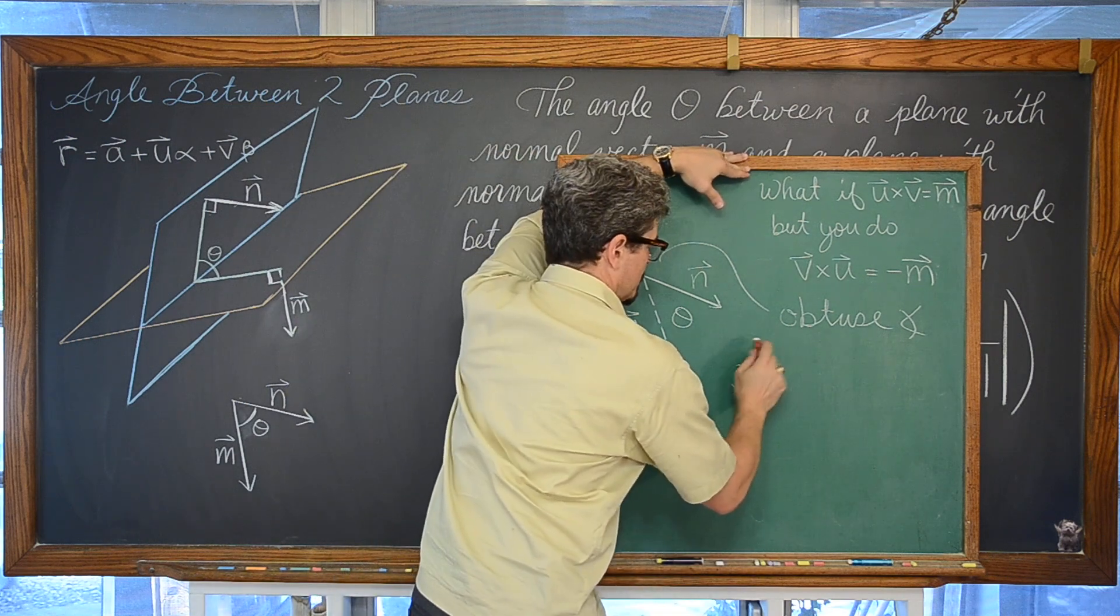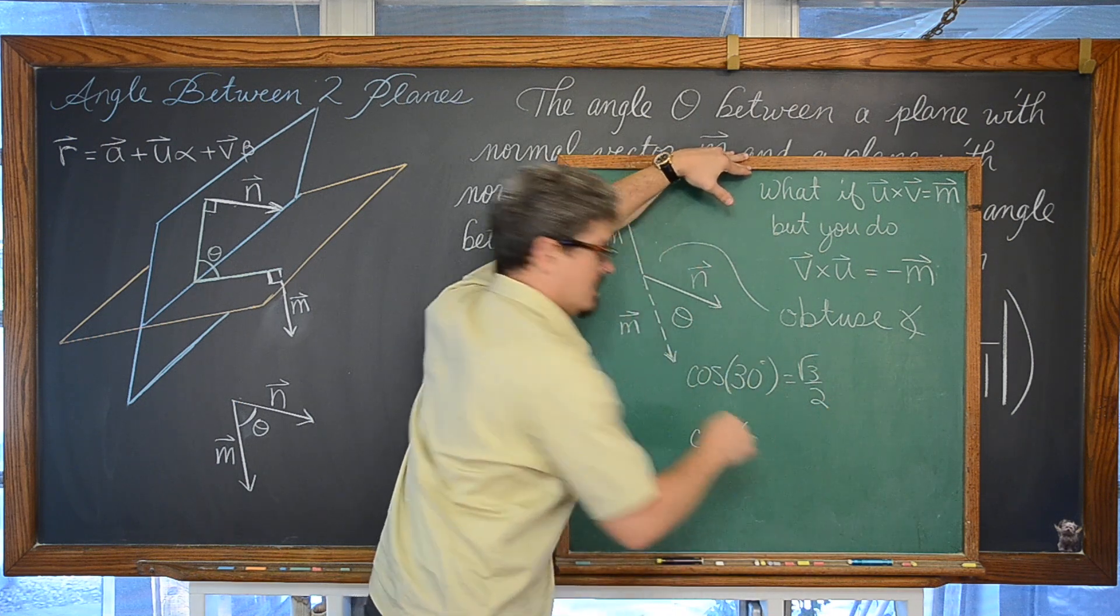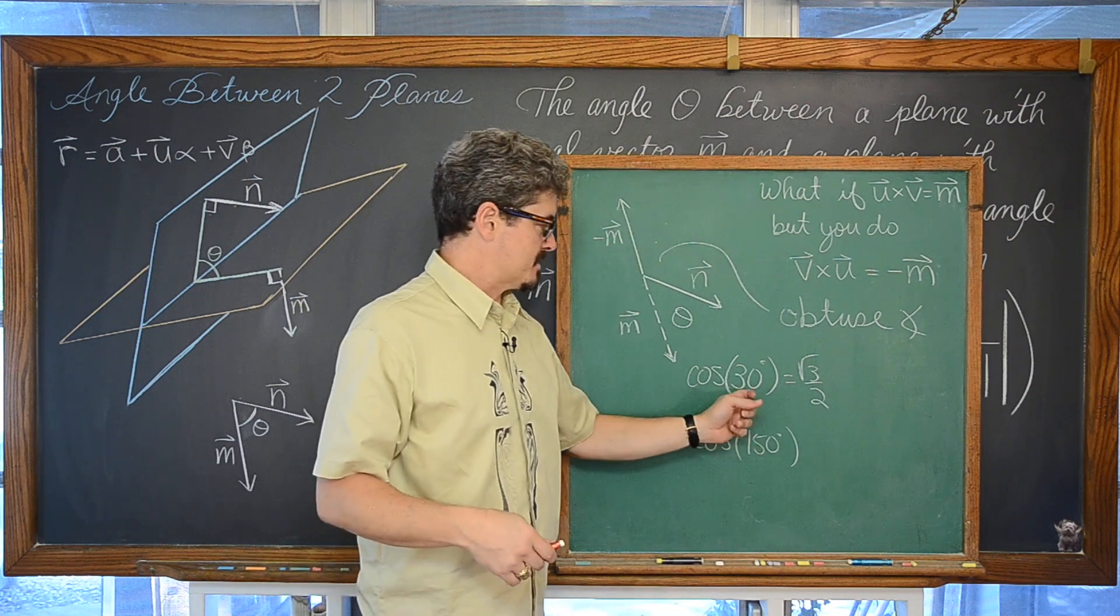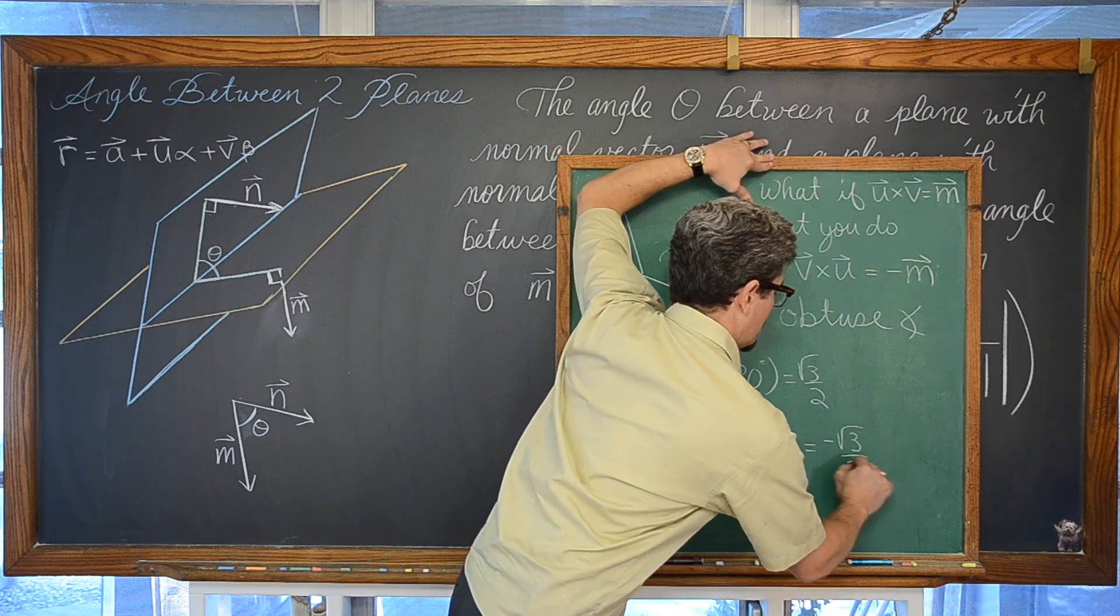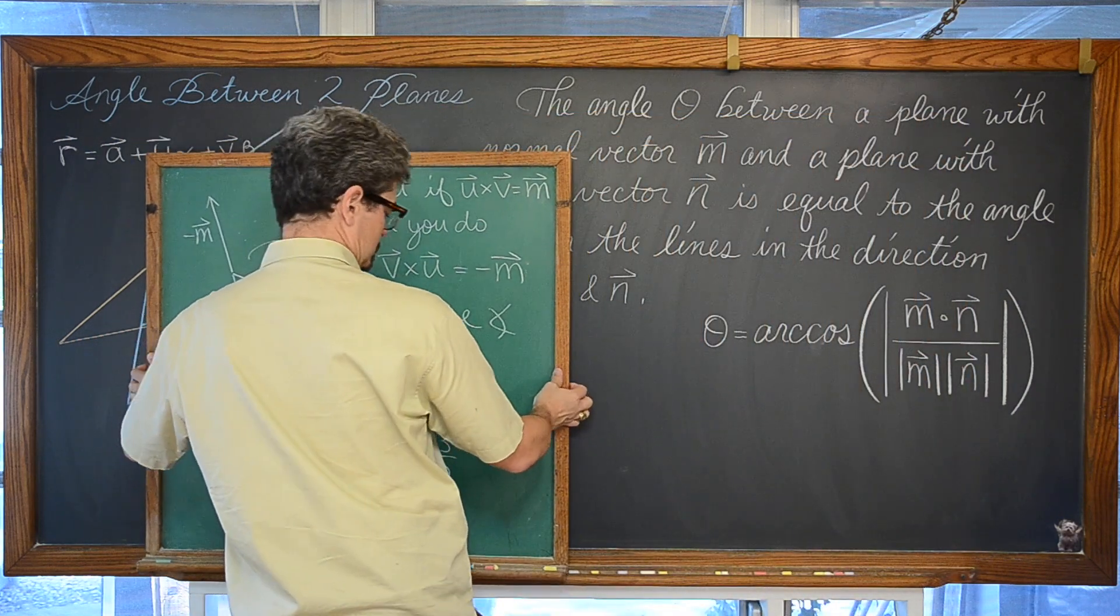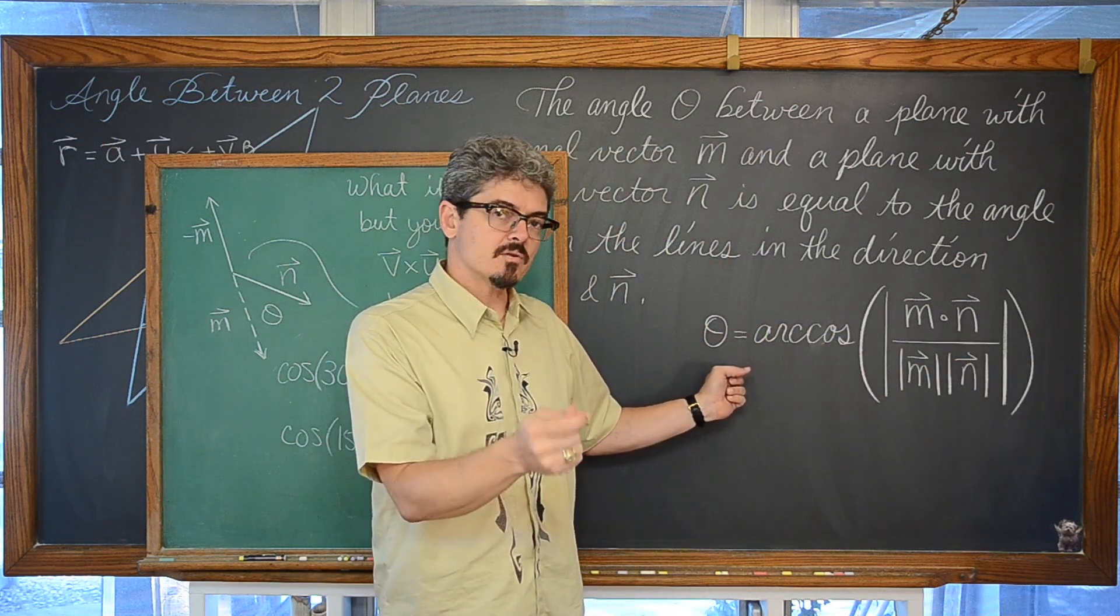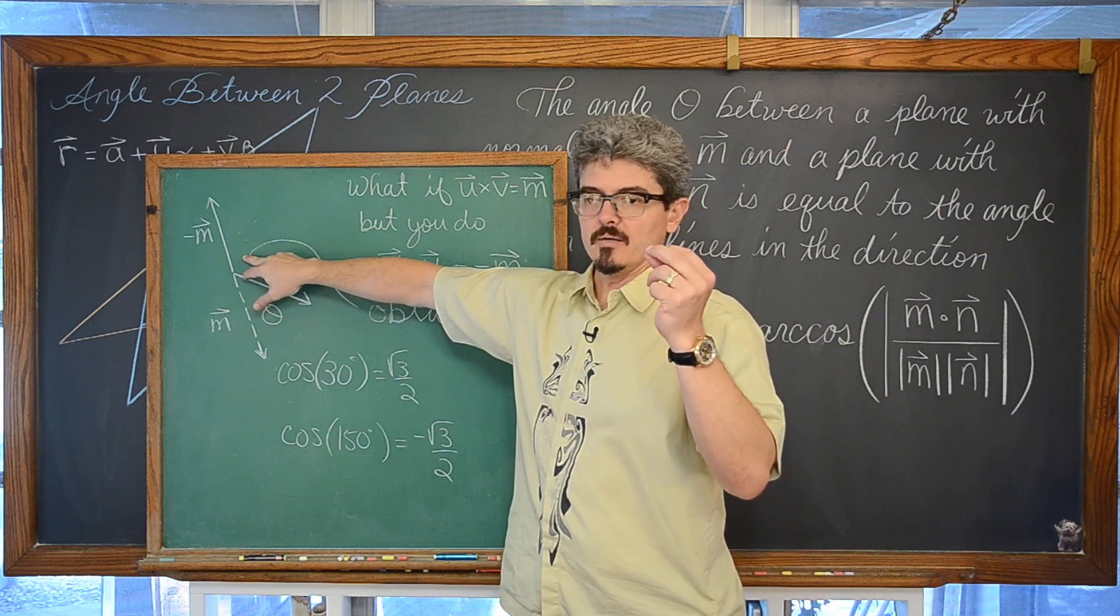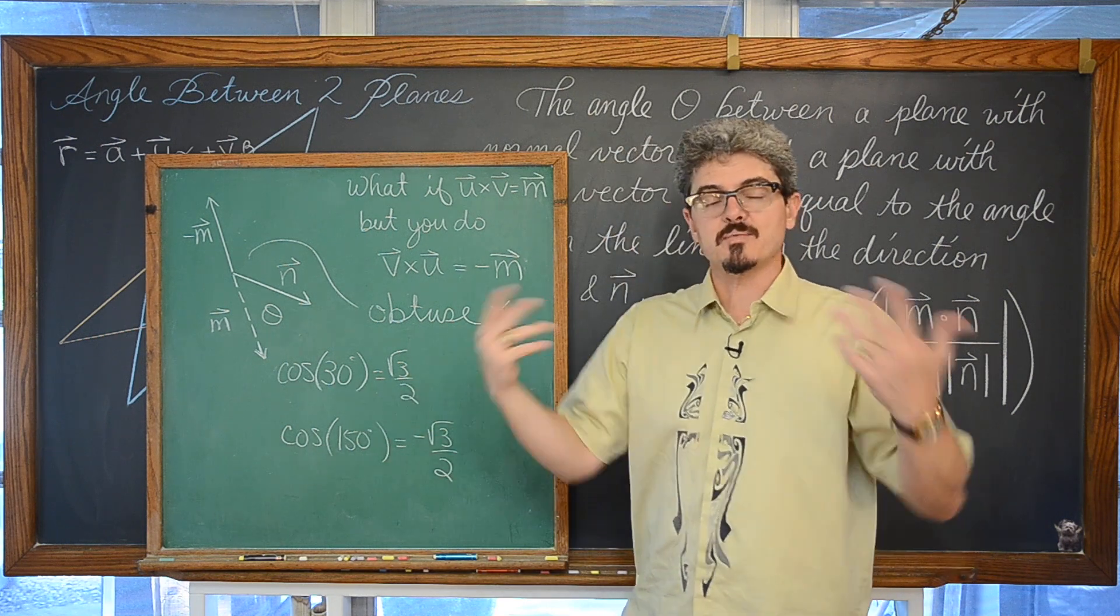Think about your unit circle from way back, right? The cosine of thirty degrees is square root of three over two. The cosine of the supplement of this angle, the obtuse part of it, would be 150 degrees. When we were studying unit circle, we would just highlight how this is in quadrant one and this is in quadrant two with that same thirty degree reference angle. You would get not the same answer, but opposite answers. The absolute value function is in here to make sure that the angle that we get is going to be that acute angle that we're looking for between the intersection of those two planes.